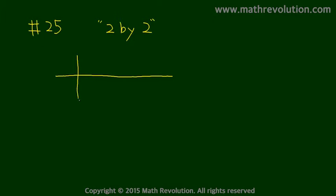I'm going to draw two sets of two lines like this. We call this 2 by 2. This is a 2 by 2 table. See two lines there and two lines here.